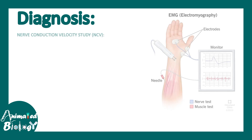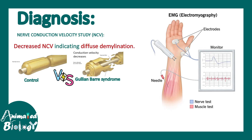Diagnosis involves nerve conduction velocity study, known as NCV. There is a decreased NCV indicating diffuse demyelination. Myelination normally increases nerve conduction velocity, but in this condition demyelination reduces the velocity.